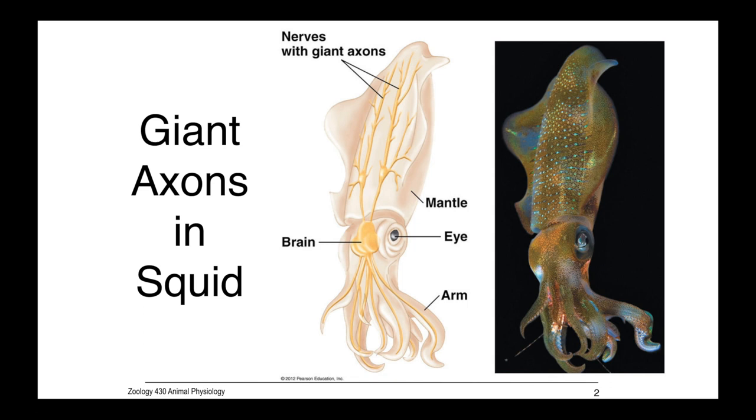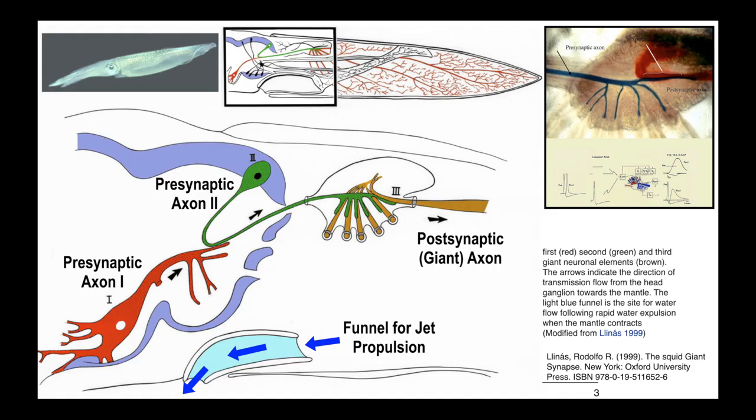They used the humble squid, and many essential elements of how chemical synapses function were discovered by studying these giant axons with their giant synapses. Squid have an escape response that uses jet propulsion, and it's triggered by these giant axons that can be up to a millimeter and a half in diameter.